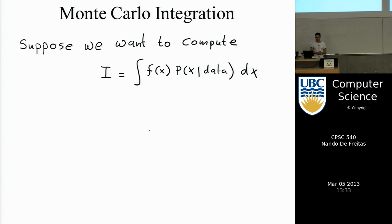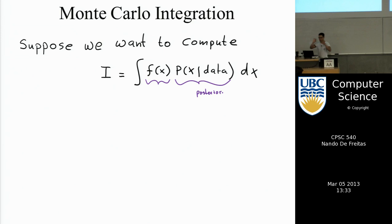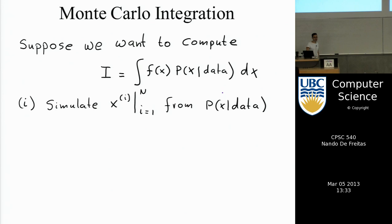In an abstract sense, all the problems we're trying to solve are integrals of some arbitrary function f of x with respect to some posterior distribution. The way we do this is we assume we can draw random samples from the distribution. We don't need to know how to normalize the distribution — if we can draw random samples, we can approximate the integral.